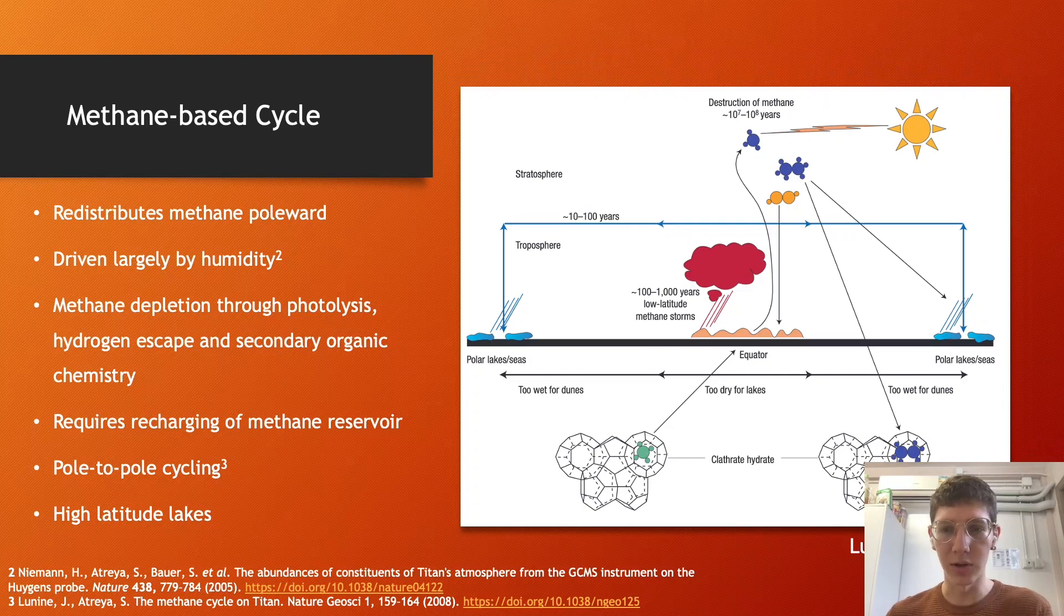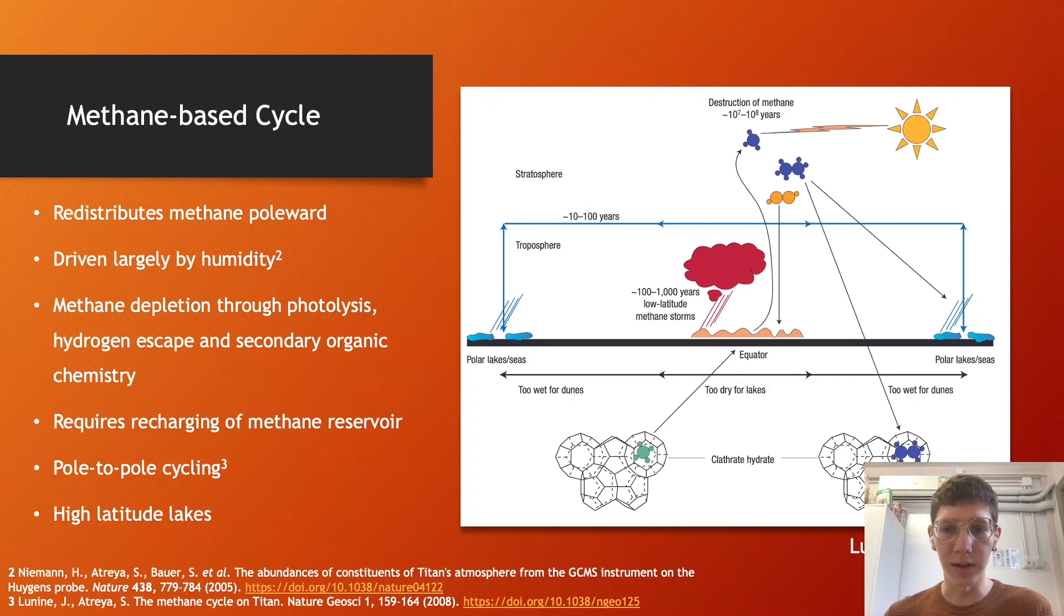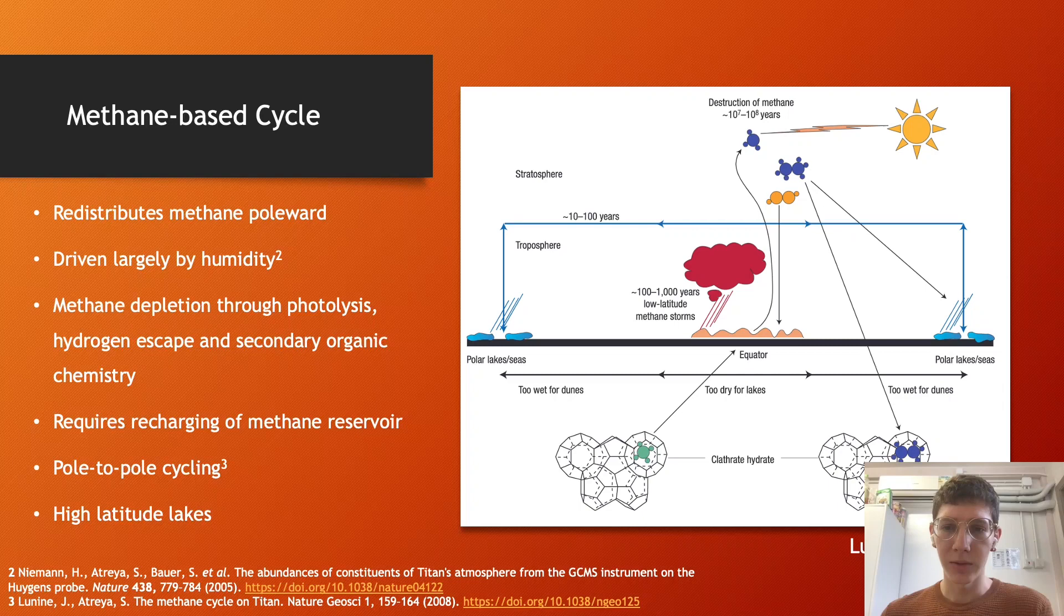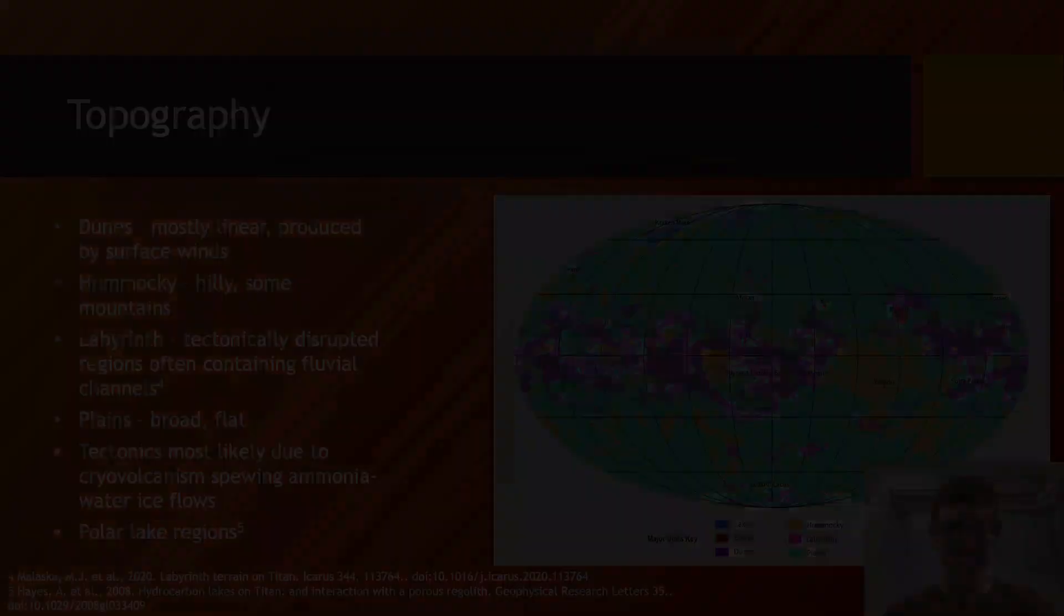The depletion of methane through photolysis and subsequent hydrogen escape would severely limit the long-term methane cycle, and so it must be recharged through some mechanism. And methane would then cycle from pole to pole residing at high latitudes in lakes. When equatorial humidity is high enough, convective storms at low latitudes are possible, playing a role in carving fluvial features.